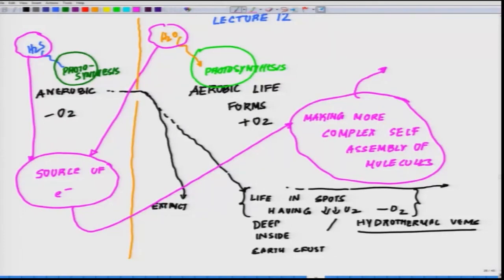Source of electron in making more complex self-assembly of molecules and that essentially brings us to if you remember the last week this is where you see molecules like CO2 is making carbohydrates which are much more organized bigger molecules.